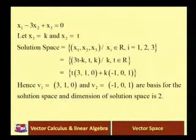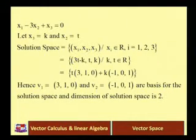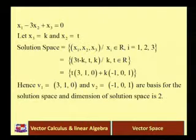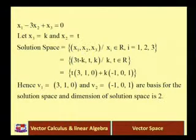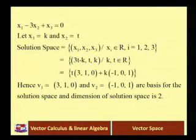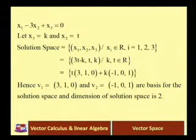The equation is x1 minus 3x2 plus x3 is equal to 0. We suppose x3 equal to k and x2 equal to t. Using these, we get x1 equal to 3t minus k. The solution space is {3t minus k, t, k}, which can be written as t times (3, 1, 0) plus k times (minus 1, 0, 1). So the vectors (3, 1, 0) and (minus 1, 0, 1) are linearly independent and form a basis for the solution space, and the dimension of the solution space is 2.